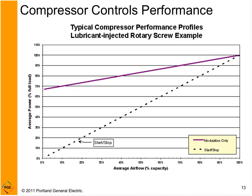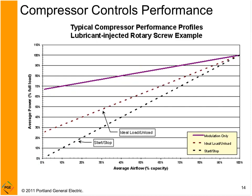Start/stop is the best you can do: the compressor operates fully loaded, rises to the pressure set point, then shuts off. Like your gas station compressor, it just bangs back and forth — start, stop, start, stop — against the pressure range. That is the most efficient control strategy.